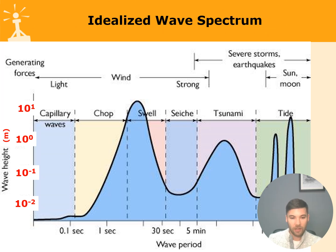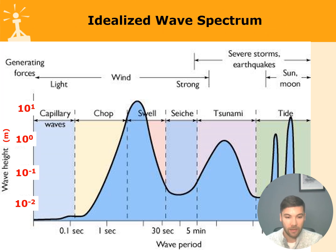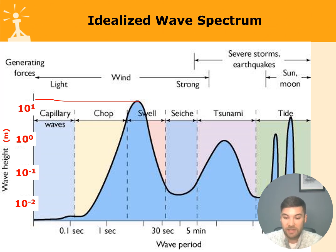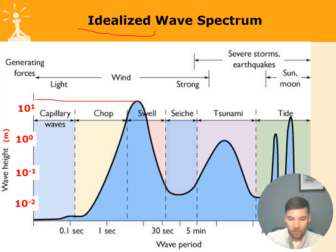From the ruler on the left side of the table, you can understand the theoretical maximum possible height of each wave type. Capillary waves have the smallest period and the smallest height — tiny waves on the water surface. Chop can be a little bigger, and swell can reach up to 10 meters. Tides can be even 17 meters high in some areas. According to this table, tsunamis can reach 10 meters, but they can actually be higher. This table gives you an approximate understanding of how different wave types differ from each other.